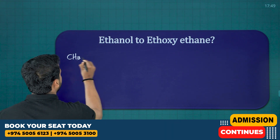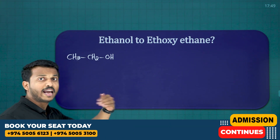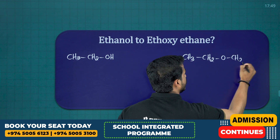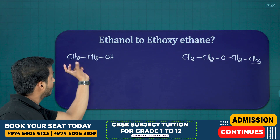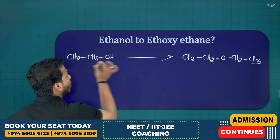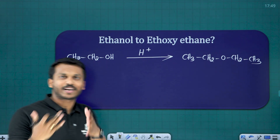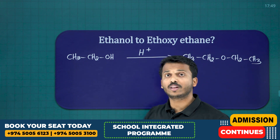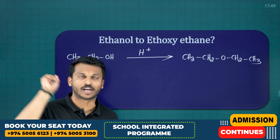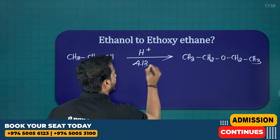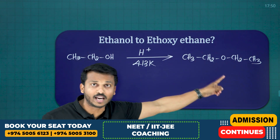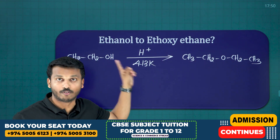What is ethanol? CH3CH2OH. How can we convert ethanol to ethoxyethane? Ethoxyethane is CH3CH2-O-CH2CH3. The basic reaction is ethanol heated with an acid. When ethanol is heated with acid at 443 kelvin, it undergoes dehydration. But if you want an ether — ethanol to ethoxyethane — the temperature is 413 kelvin.